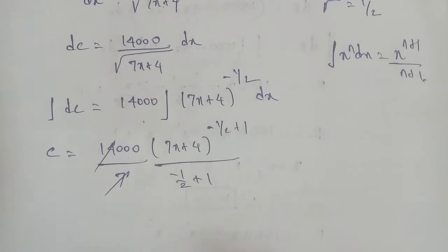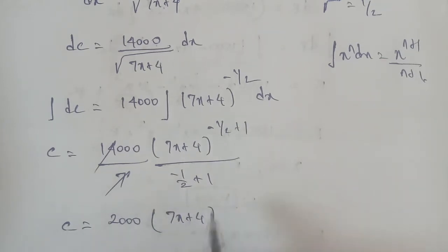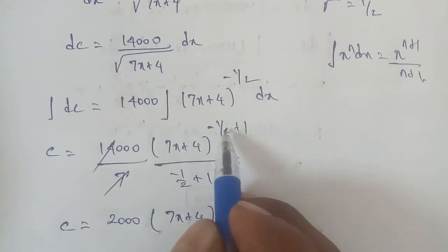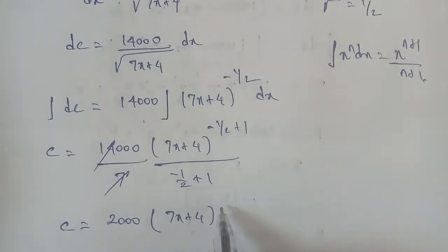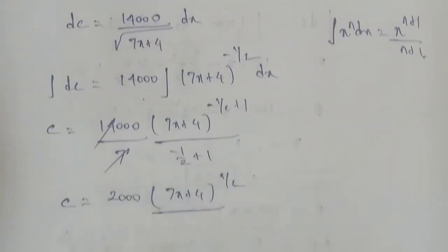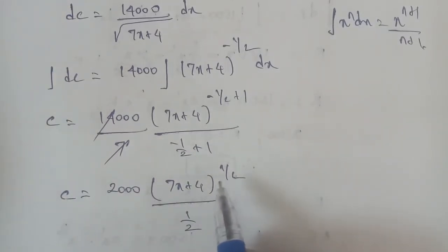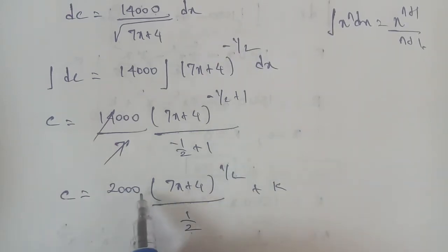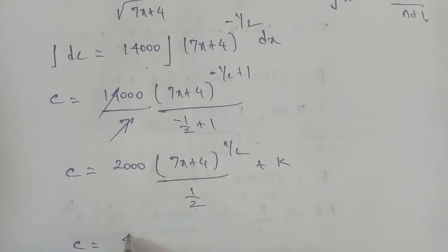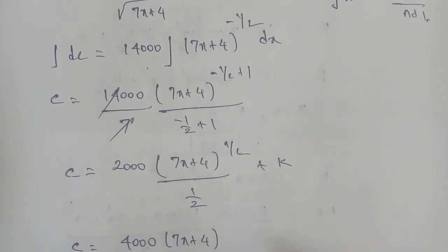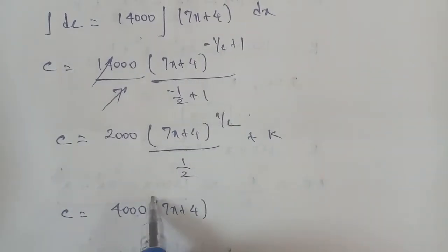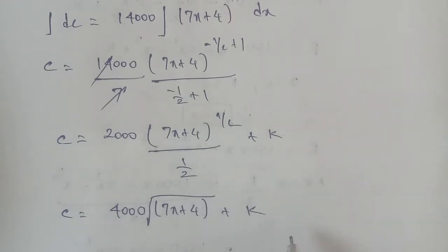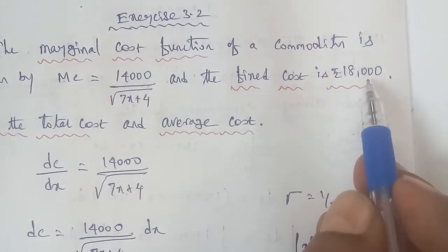After cancelling and simplifying — the 2 cancels — therefore C is equal to: (7x plus 4) to the power of minus 1 by 2 plus 1, which is 1 by 2. Dividing by 1 by 2 gives multiplication by 2. So 14,000 multiplied by 2 divided by 7 gives 4,000. Therefore C is equal to 4,000 times square root of (7x plus 4), plus k.